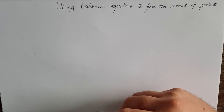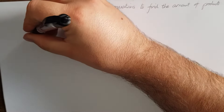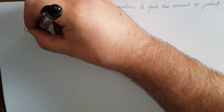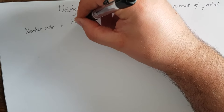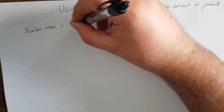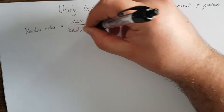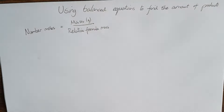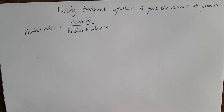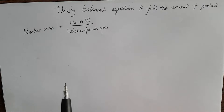There's an equation that we need to use — the one we used last week — and that is linking moles, mass, and relative formula mass. We know that the number of moles equals the mass in grams divided by the relative formula mass. That was where we added up all of the atomic masses of different elements when they were in a compound. The number of moles is our mass divided by our relative formula mass.